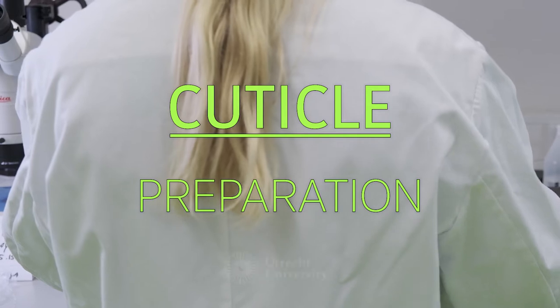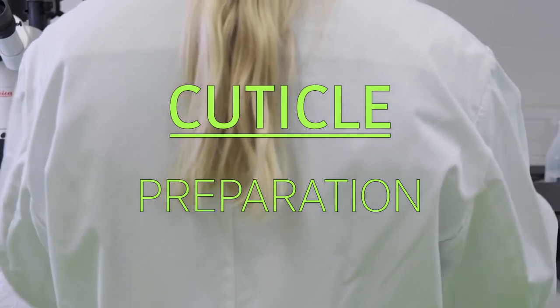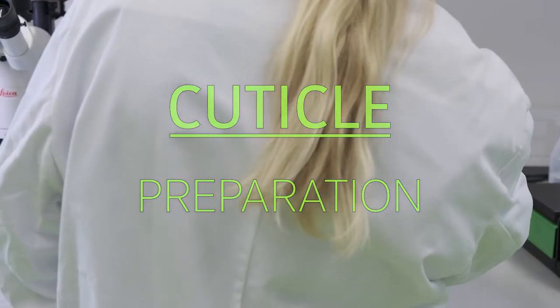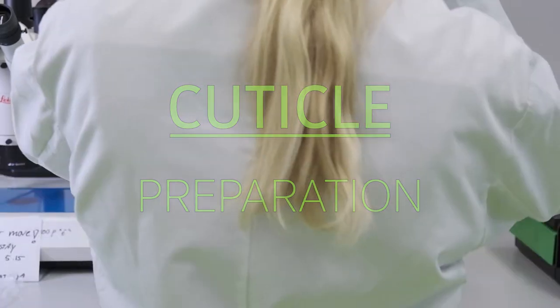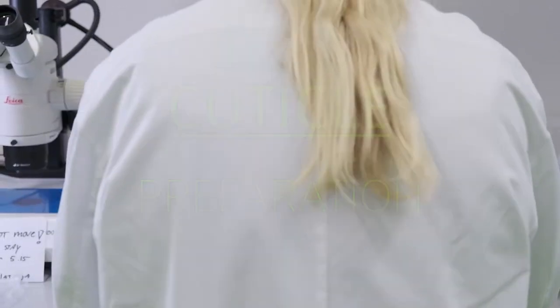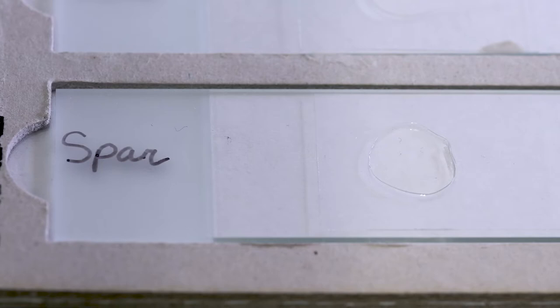A cuticle is the outer layer of a leaf and it has an imprint of the leaf epidermal cells, the stomata also, and that forms a snapshot from the moment that plant lived.